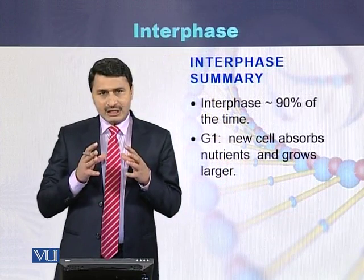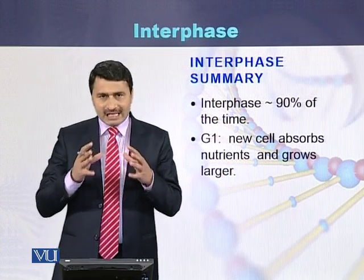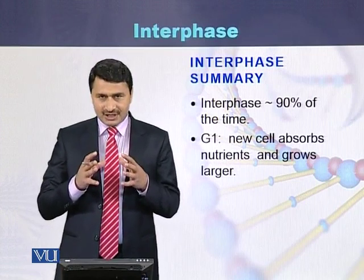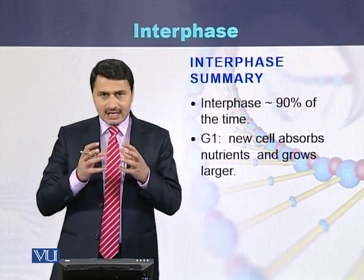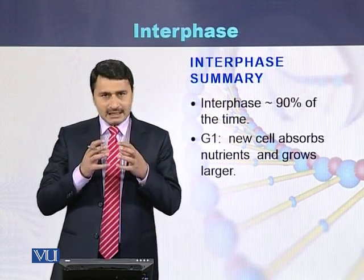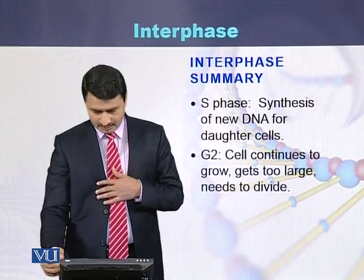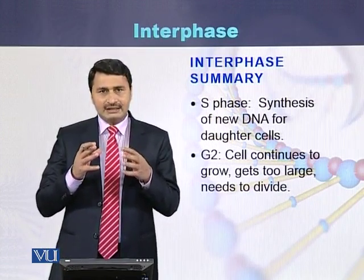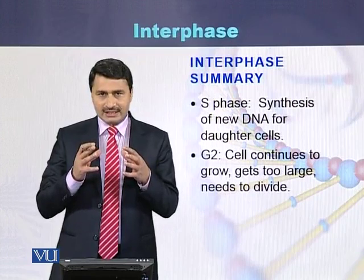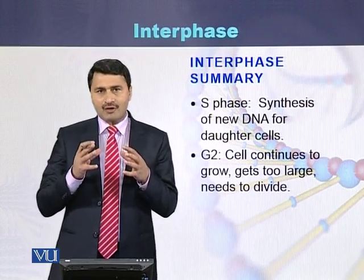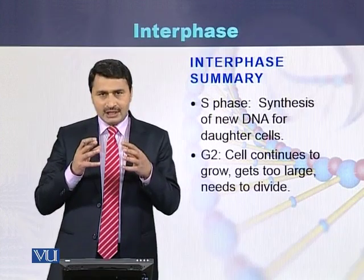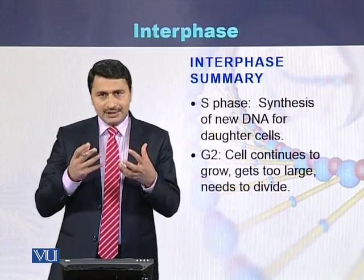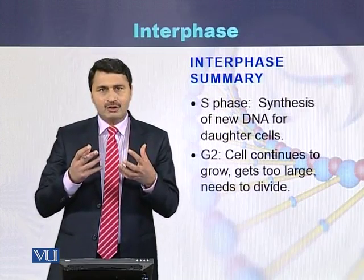Interphase takes 90% of the time of the cell cycle and consists of three stages. G1 stage is where the cell absorbs nutrients and enlarges in size. During S phase, there is synthesis of DNA — the DNA replicates. While in G2 stage, the cell continues to grow and enlarge, and ultimately prepares itself to be divided.